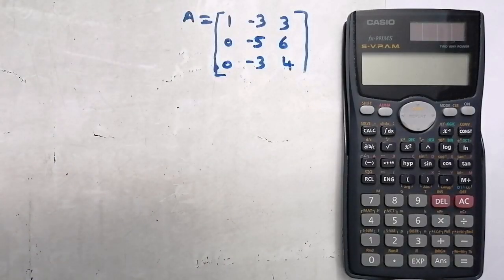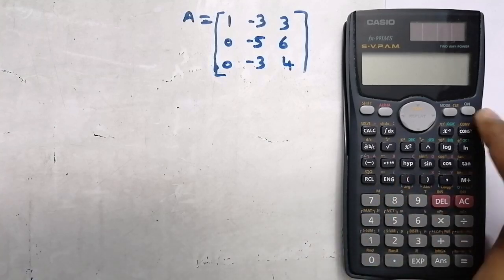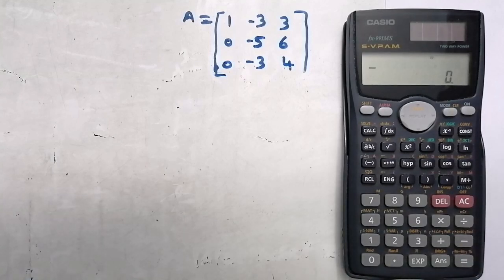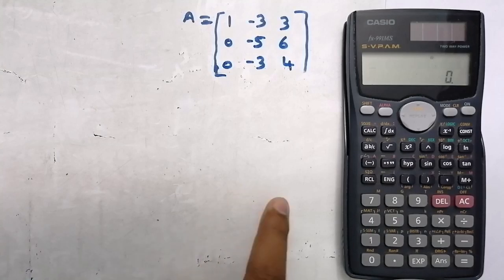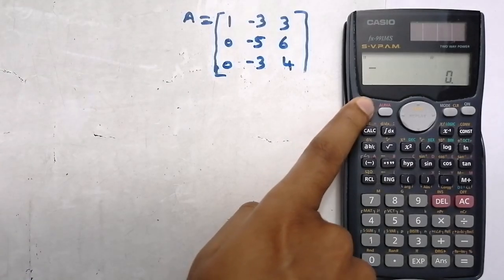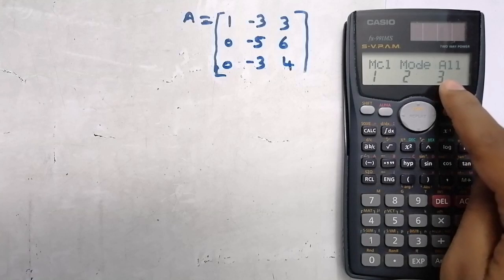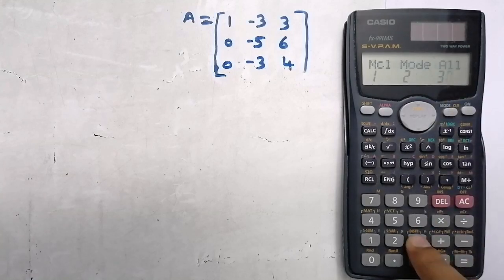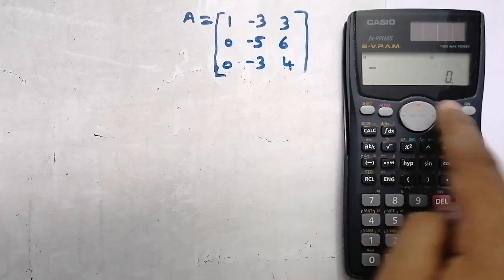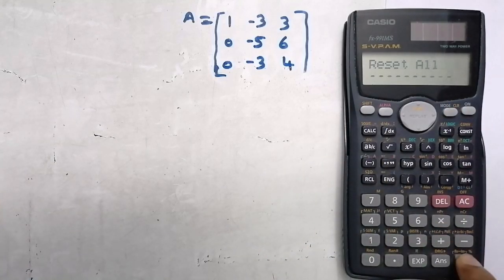In this video, I am going to show how to get the eigenvalue of a matrix using the calculator fx-991MS. First of all, switch on the calculator, then you should reset it because sometimes some functions may interfere. To reset the calculator, press Shift then Mode then 3, then Equal, Equal. So now the calculator is reset.